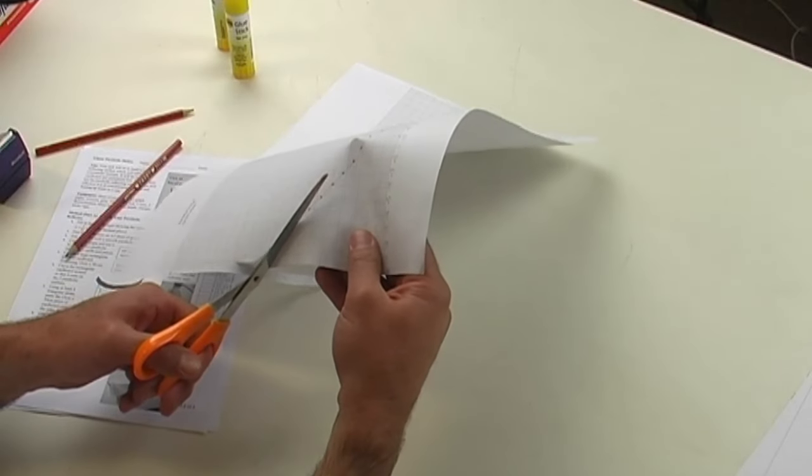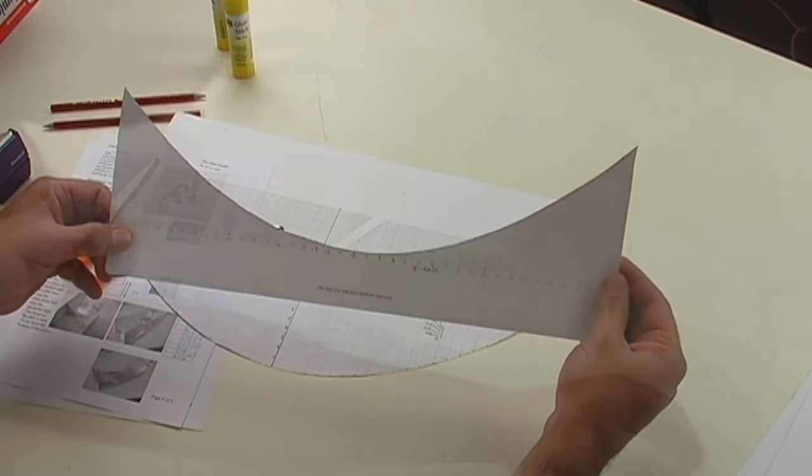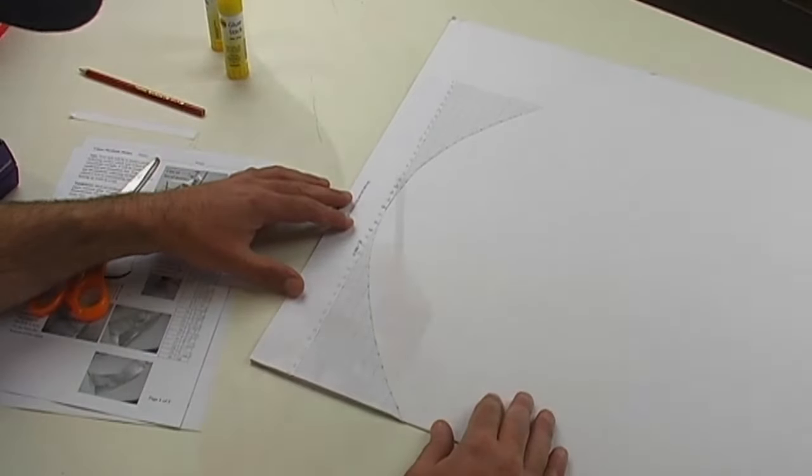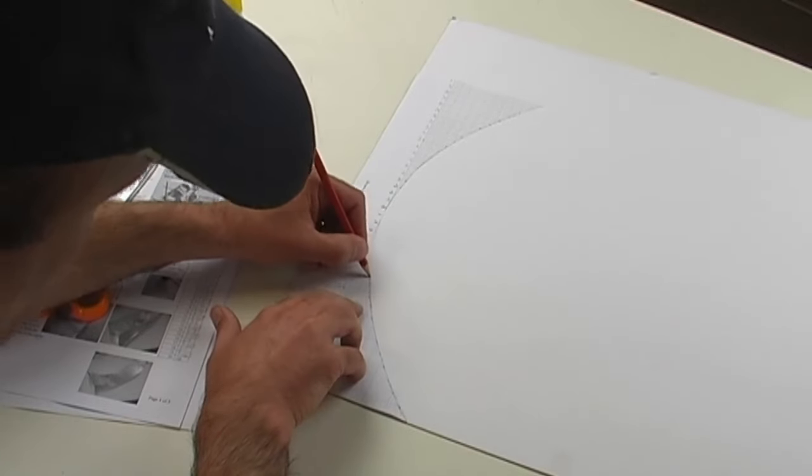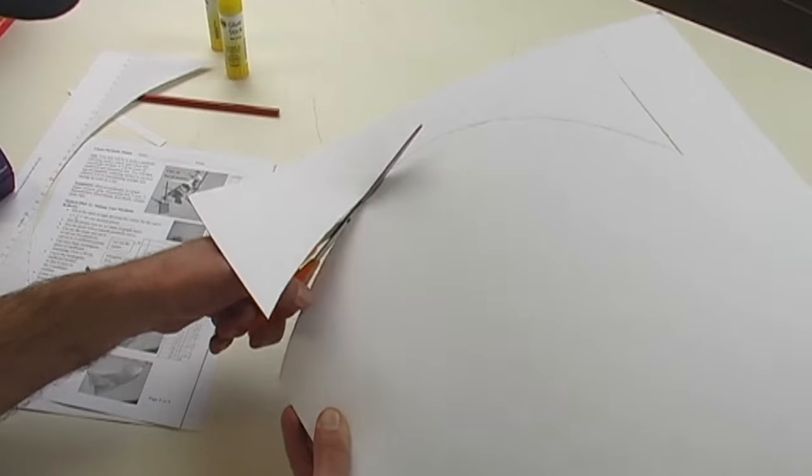Carefully cut the parabola out, making sure you leave a wide section at the bottom. Trace it onto some card, and then cut out two parabola-shaped sections.